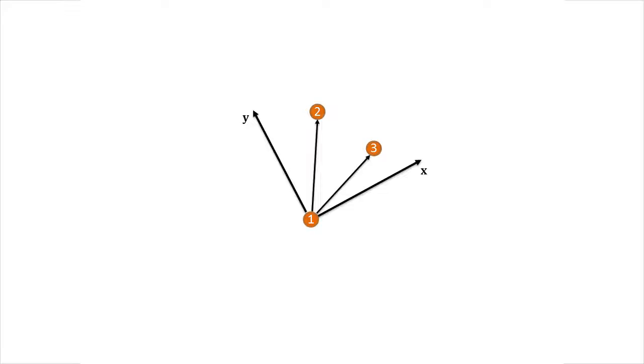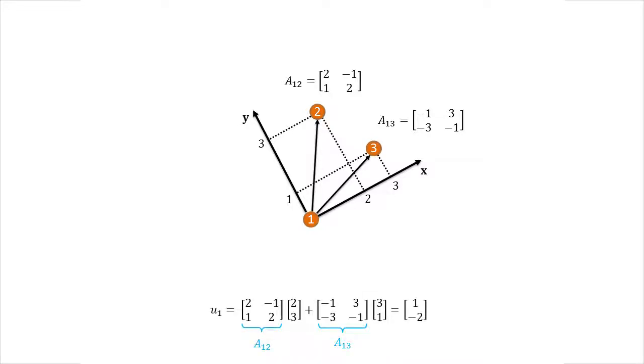Assume that agent 2 has coordinates (2, 3) and agent 3 has coordinates (3, 1) in agent 1's local coordinate frame. For each neighbor, a control gain matrix is provided to agent 1. The control for agent 1 is then computed by multiplying associated gain matrices and coordinate vectors and summing the results.